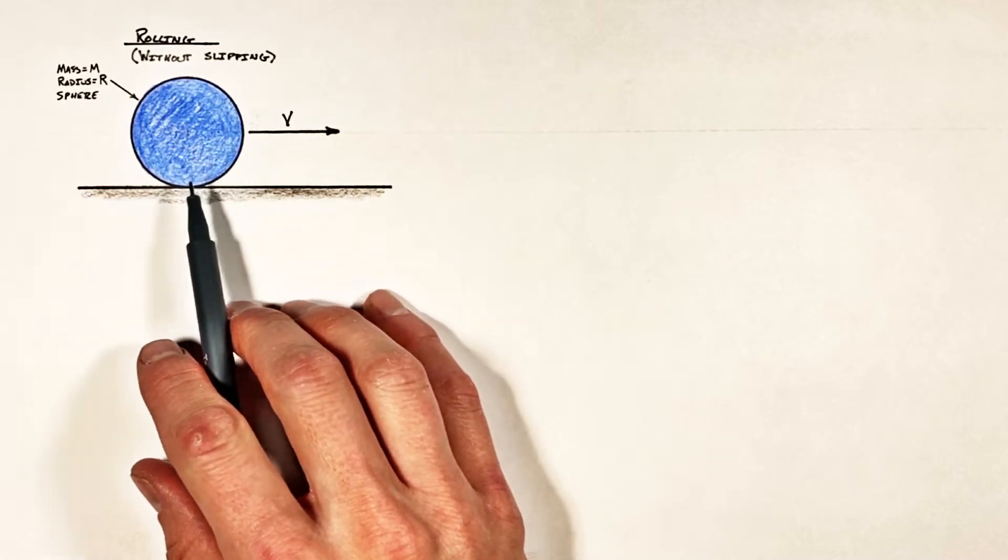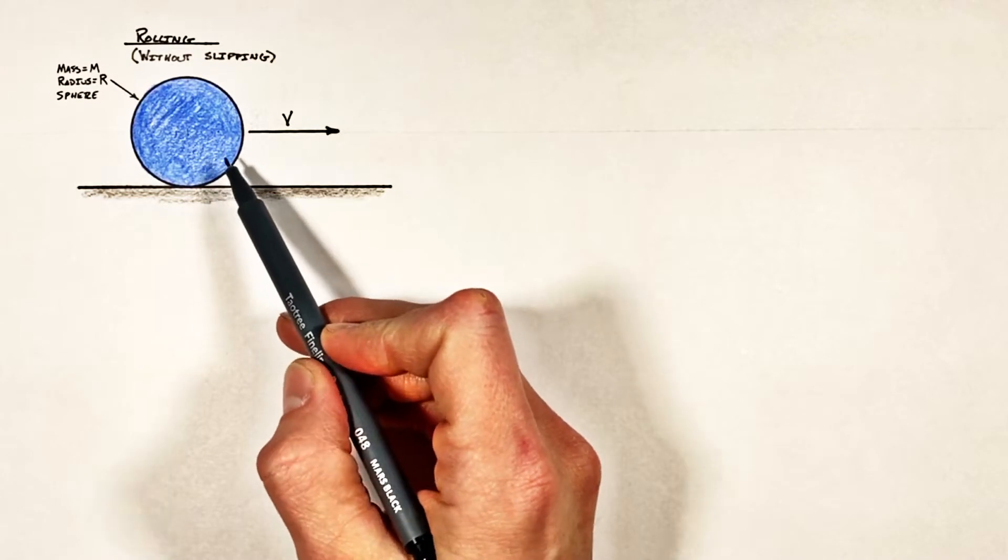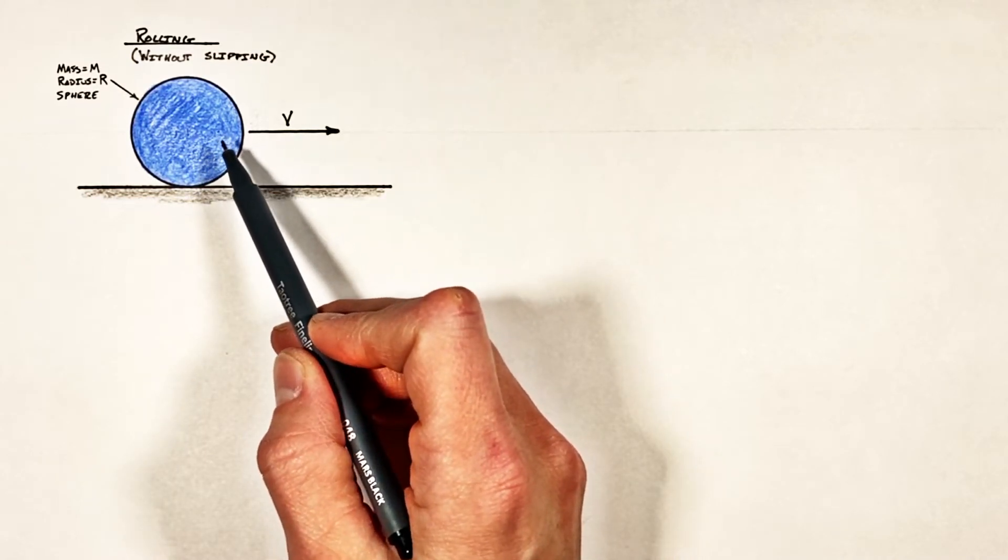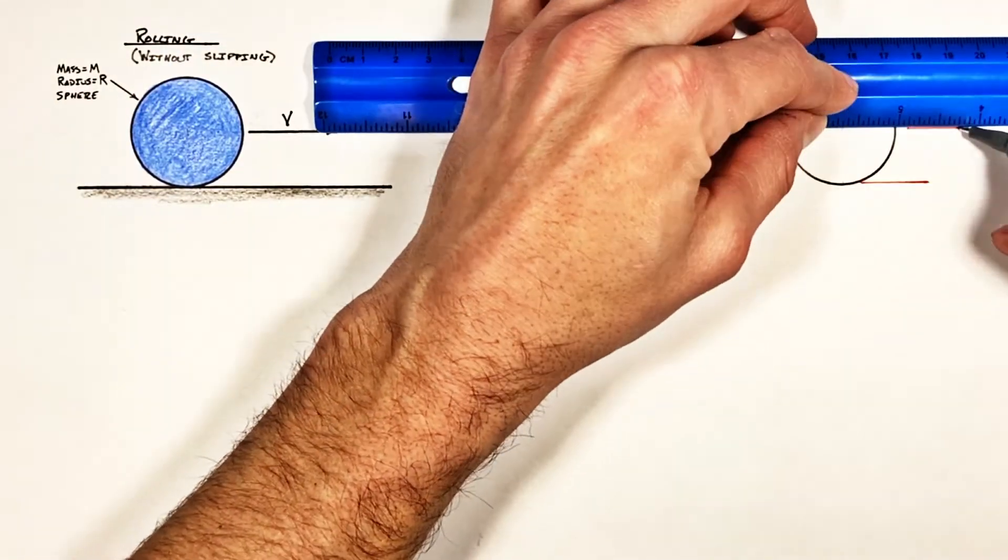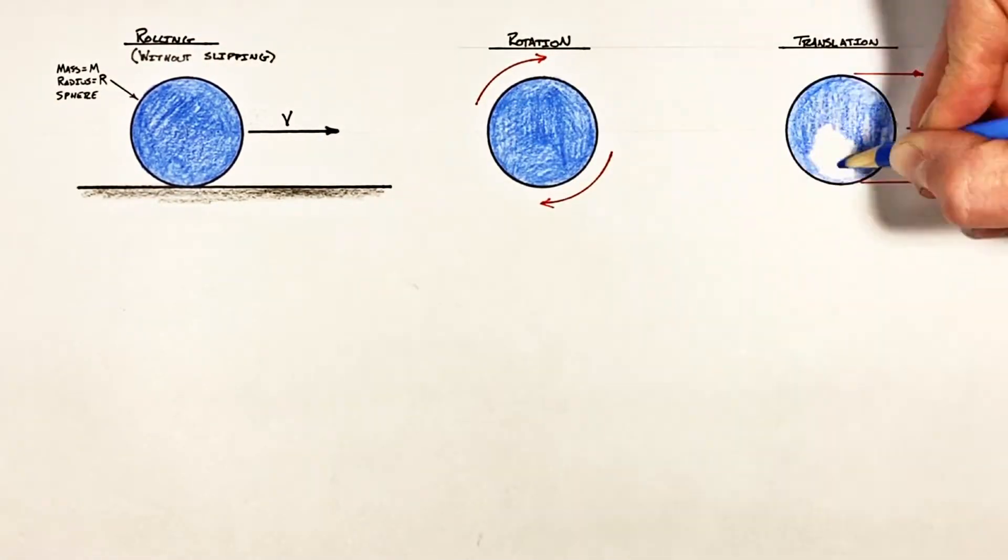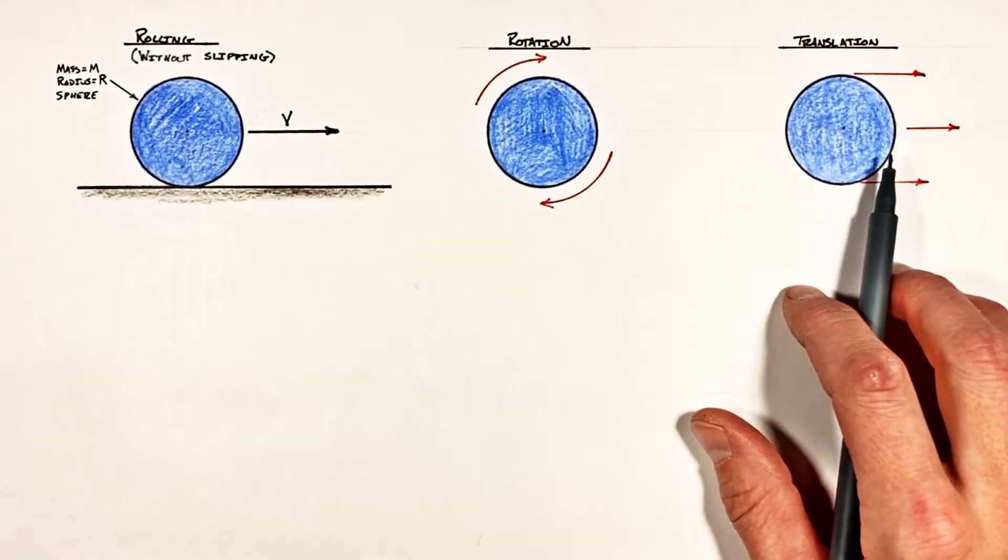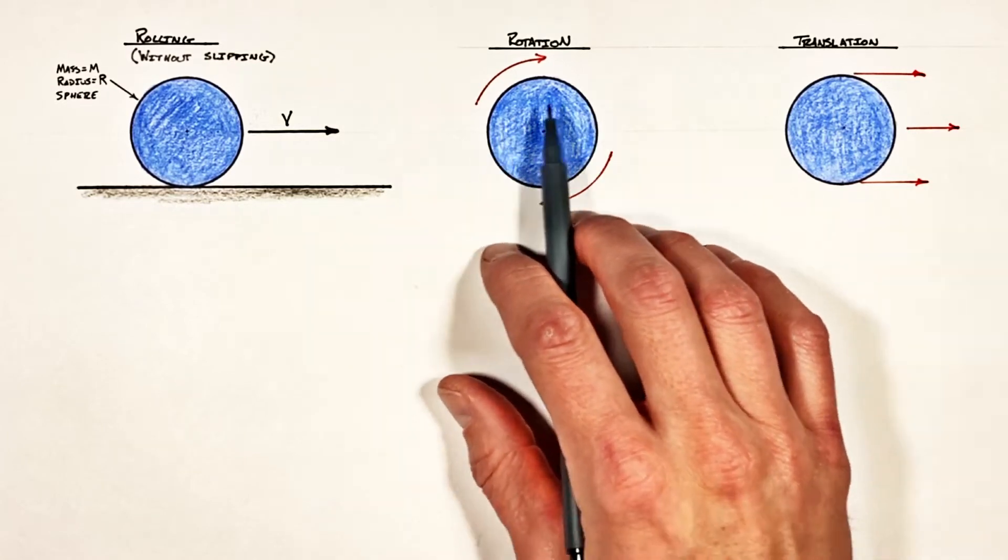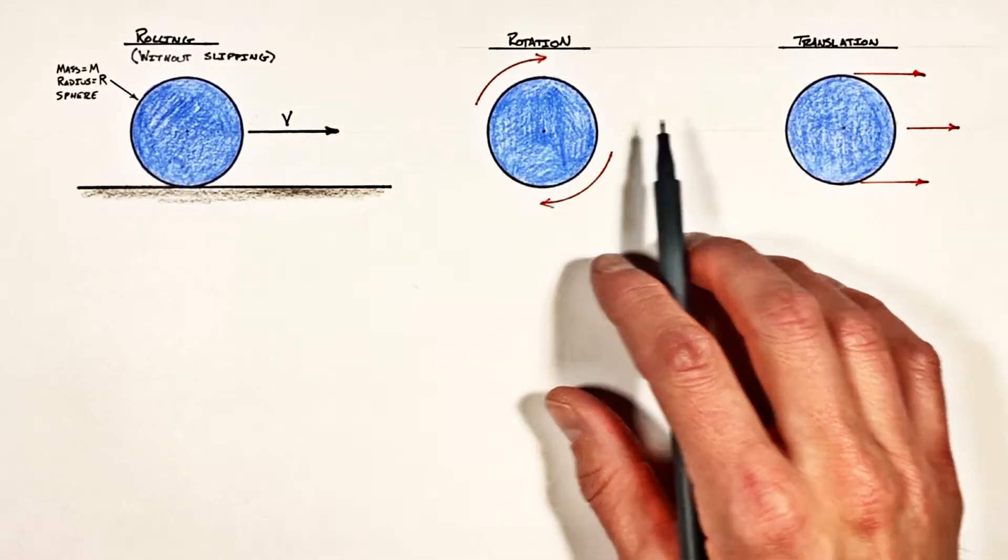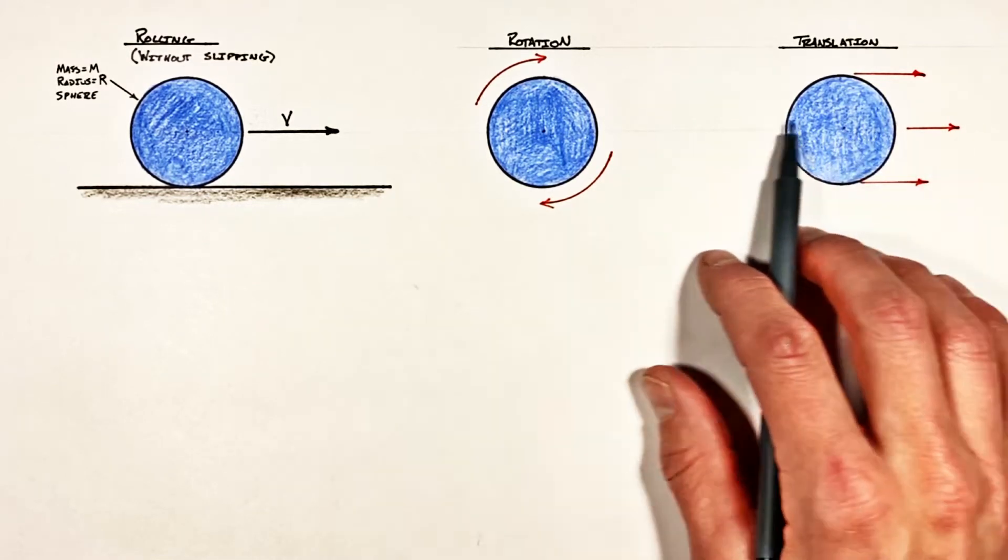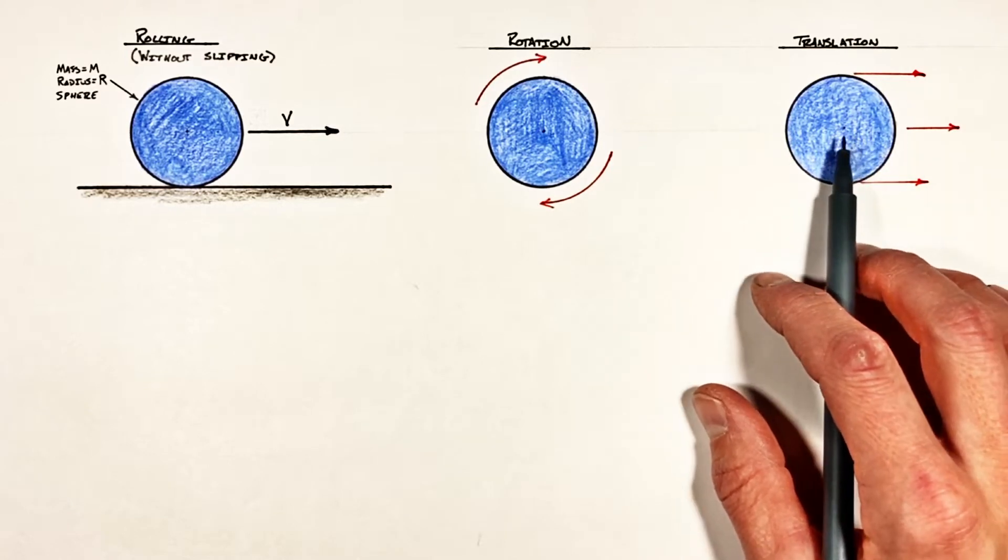See when this ball is rolling it's actually experiencing two different types of motion. Anytime an object rolls along, it's actually exhibiting two different types of motion: the first being rotation, which is simply the turning of the object around a central axis, and the second being translation, which is nothing other than the lateral motion of that object through space, kind of like a bullet shooting through space or a car driving down the road.